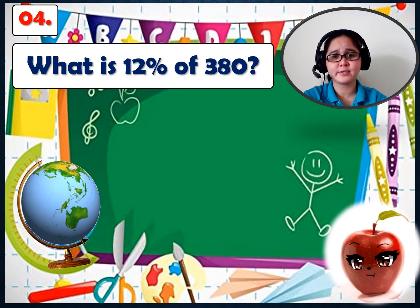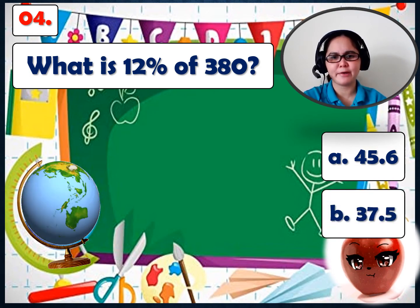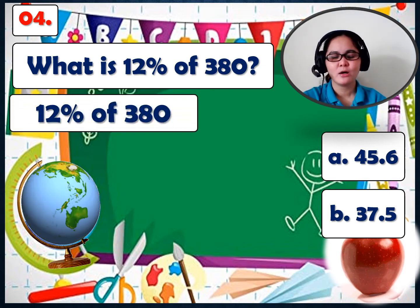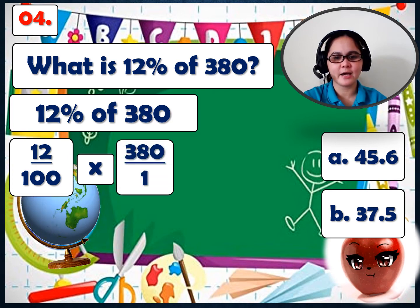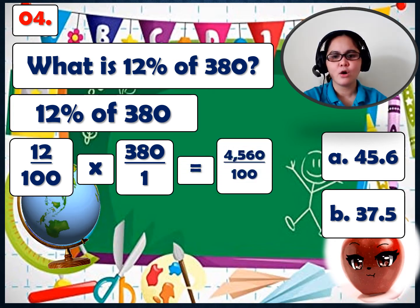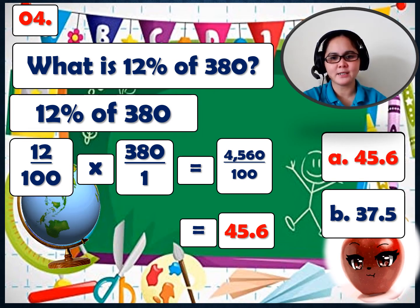Number 4: What is 12% of $380? A: 45.6, or B: 37.5. Let's solve. 12% of $380. Change 'of' into times. Using fraction form: 12 over 100 times $380 over 1. 12 times $380 equals $4,560; 100 times 1 equals $100. So $4,560 over $100 equals $45.6. Therefore, 12% of $380 equals $45.6.